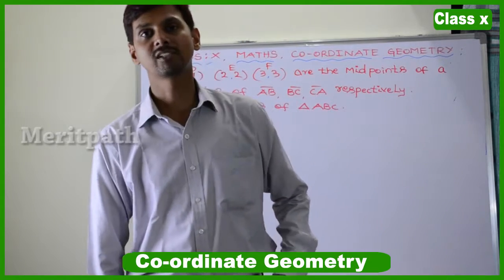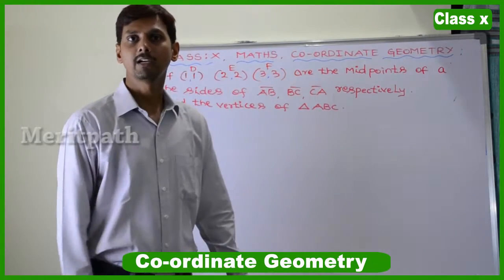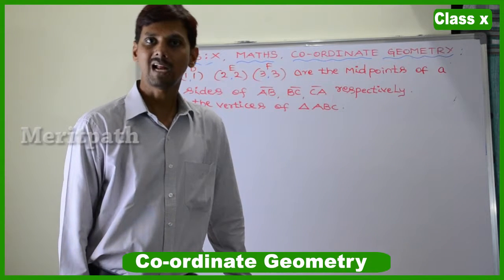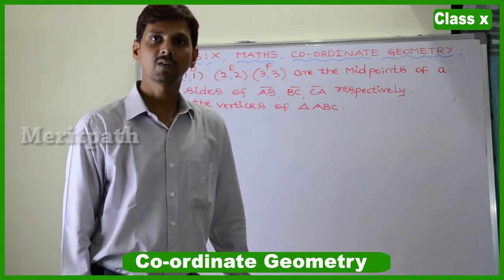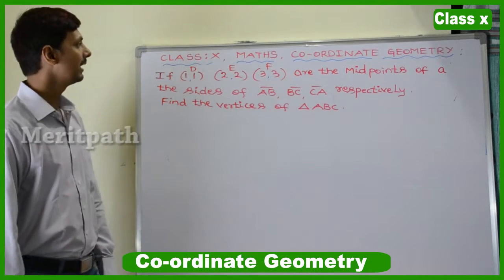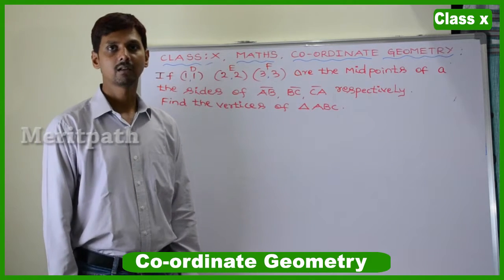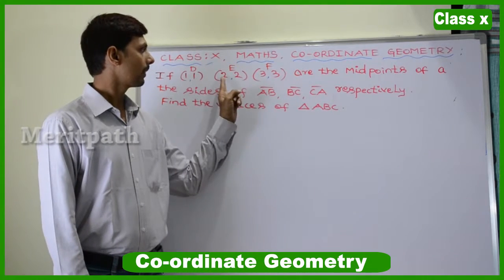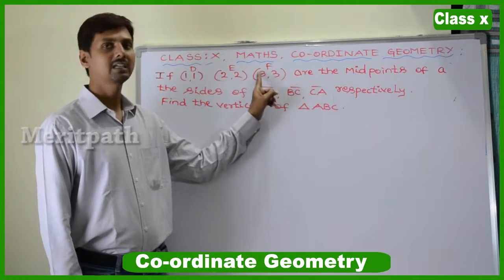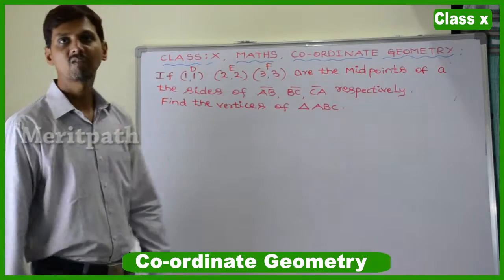In triangle ABC, the midpoints of the sides are given and we need to find out the vertices of the triangle. If D, E, F are the midpoints of the sides AB, BC, and CA respectively, we need to find out the vertices of triangle ABC.